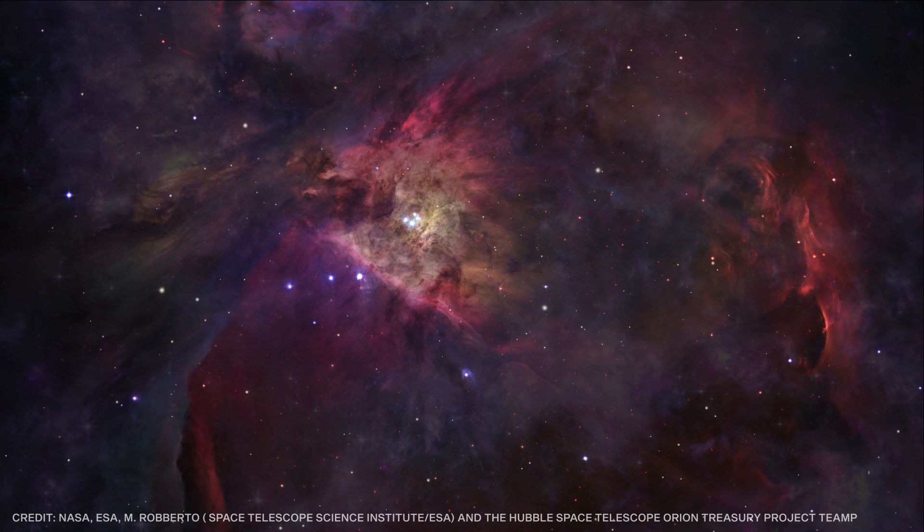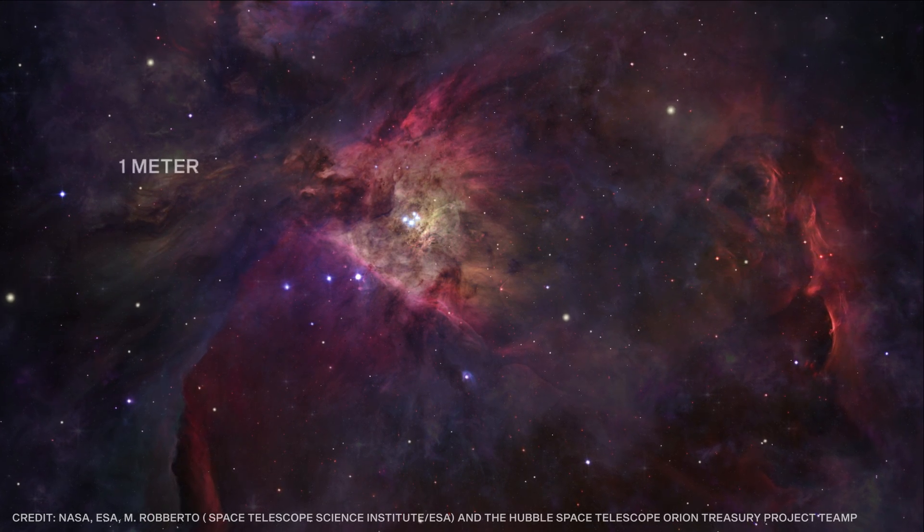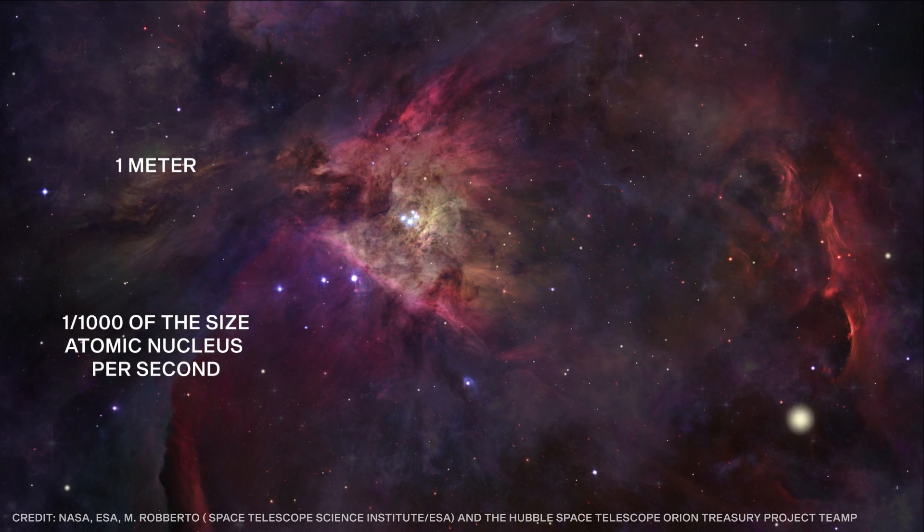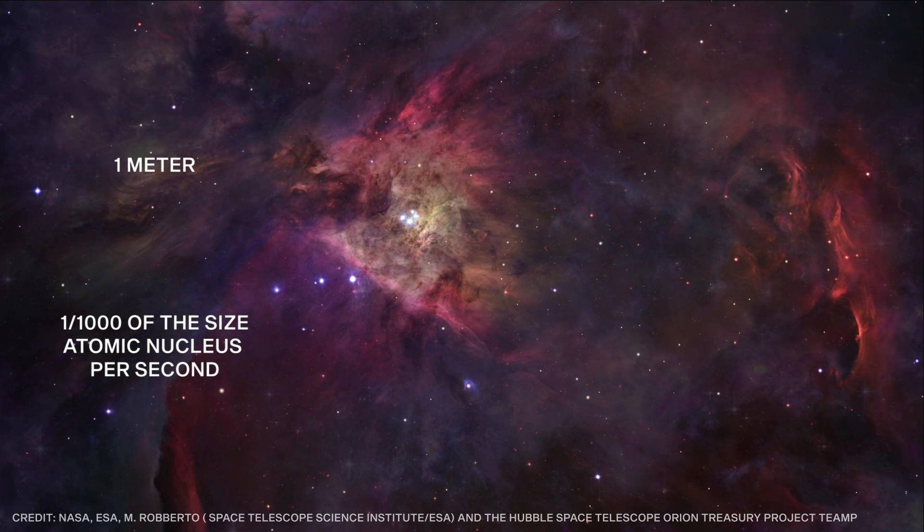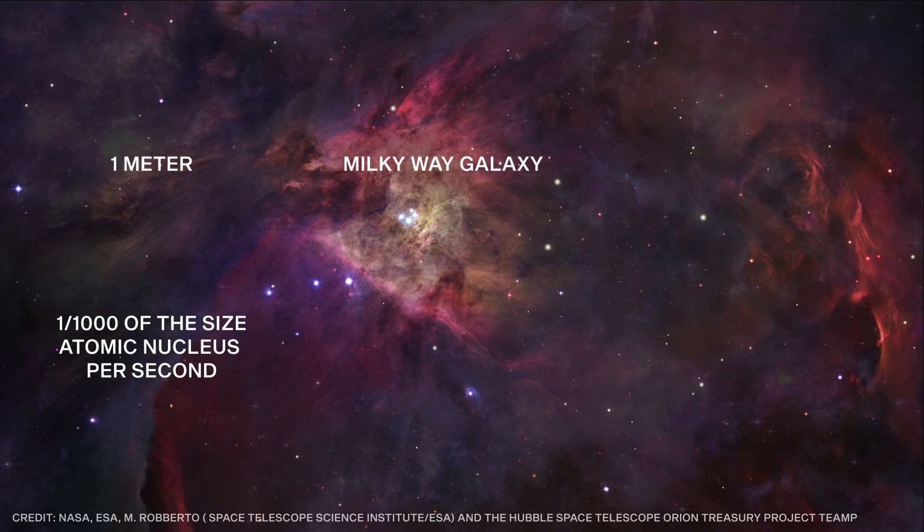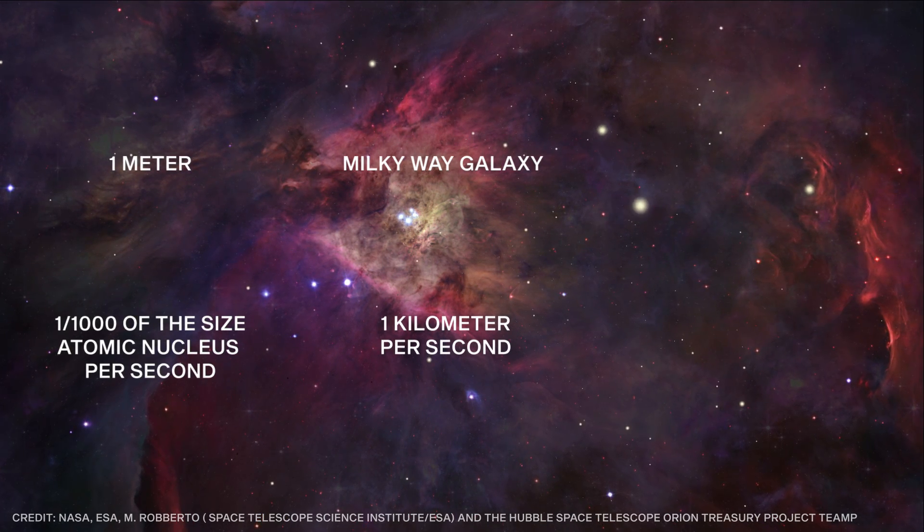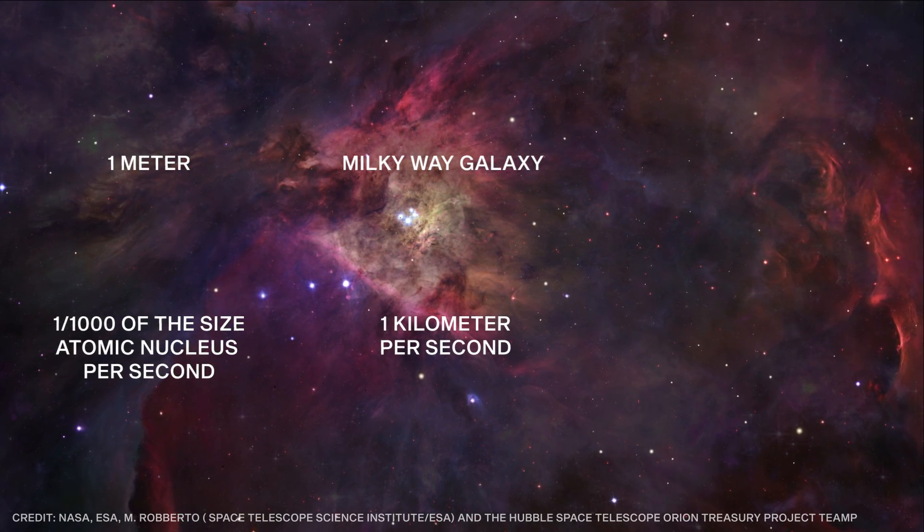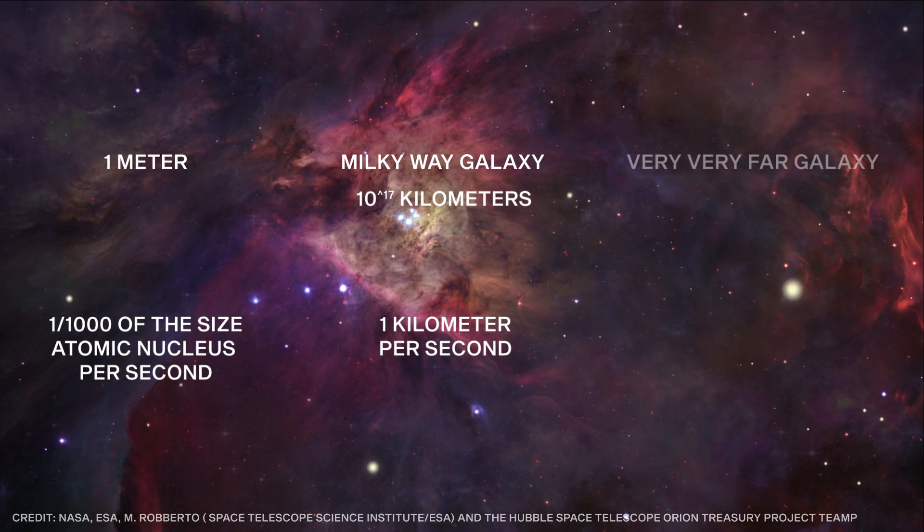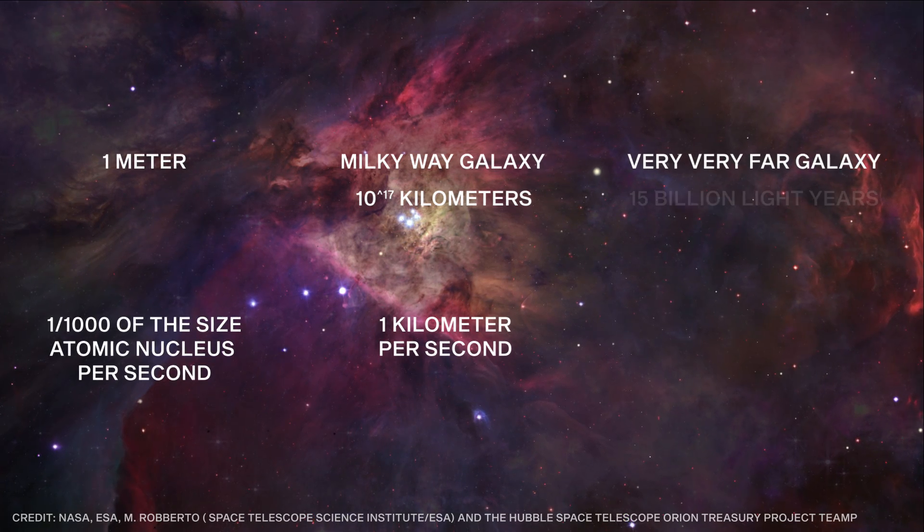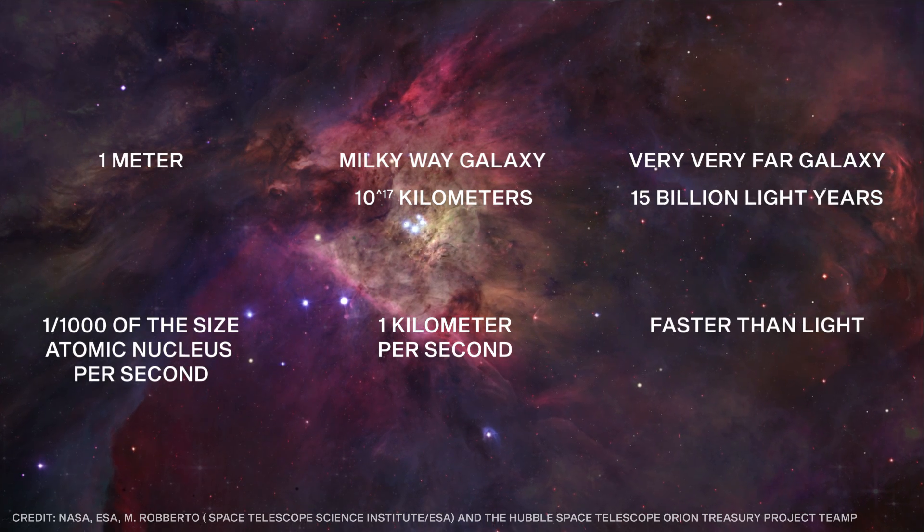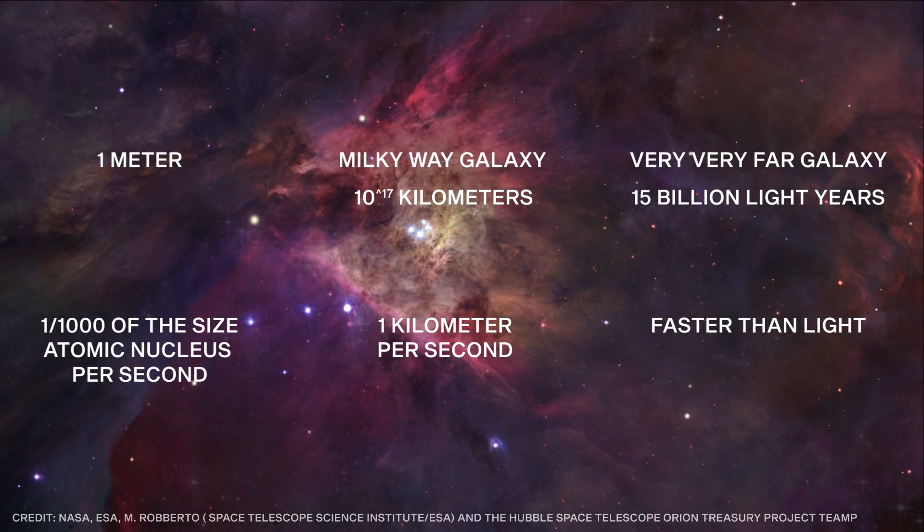But how fast is it really expanding? Your monitor, roughly one meter in front of you, will be expanding only by one thousandth of the size of atomic nucleus per second. So small, why do we even care? But consider this, one end of our galaxy is moving from the other end roughly by kilometer per second. That still may seem small, considering Milky Way spans 10 to the 17 kilometers. But if you look at a galaxy that is very, very far, to be precise, around 15 billion light years, it is moving away from us now faster than the speed of light. That means we will never see the light that is radiated just now.